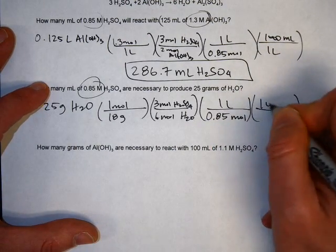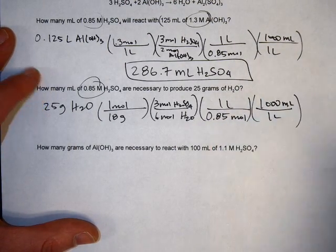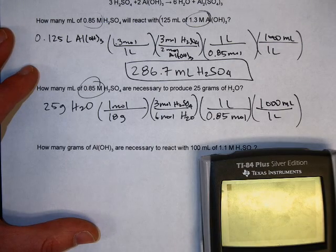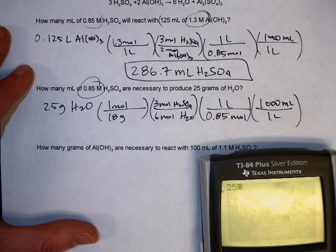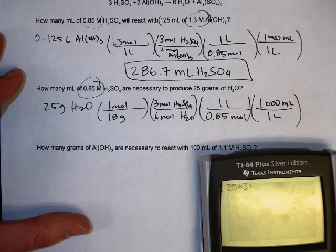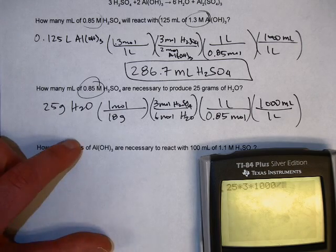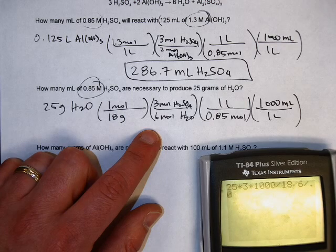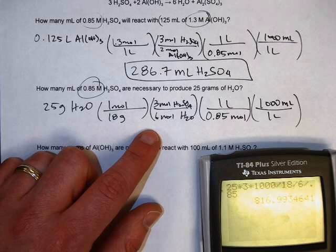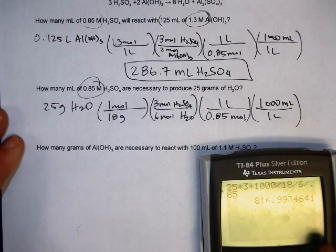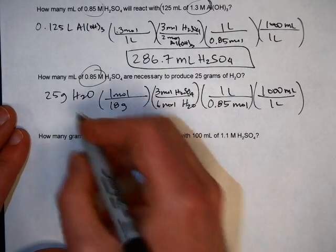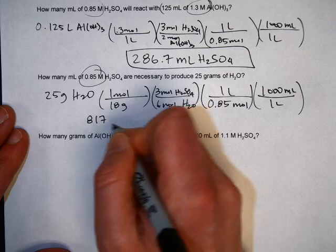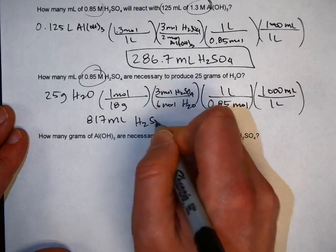And again we want it in milliliters, so might as well just tack on the 1,000 milliliters in one liter. That way we don't have to do it later. And when you plug it in you get 25 times 3 times 1,000 divided by 18 divided by 6 divided by 0.85. And I got 816, basically 817 milliliters of H2SO4.